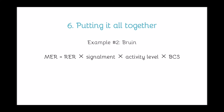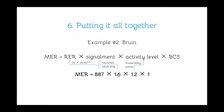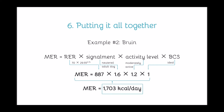For example two, Bruin the adult dog: his MER equals 887 times 1.6 times 1.2 times 1. His RER is 887 kcal per day. For his signalment, he is a neutered adult dog, so he gets a factor of 1.6. For activity level, Bruin is moderately active and exercises a couple of times a week, so he gets a factor of 1.2. For body condition score, Bruin is currently ideal, so he gets a factor of 1. Multiplying all those factors out gives Bruin a maintenance energy requirement of 1,703 kcal per day — the number of calories he should be eating each day to keep him at an ideal body condition.